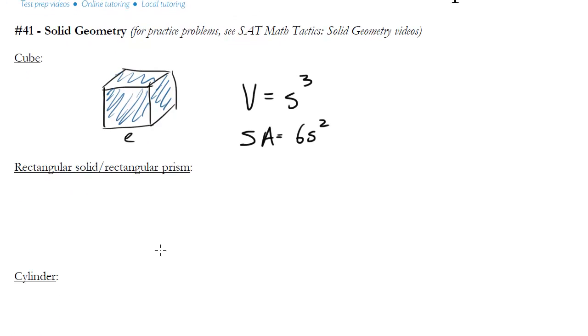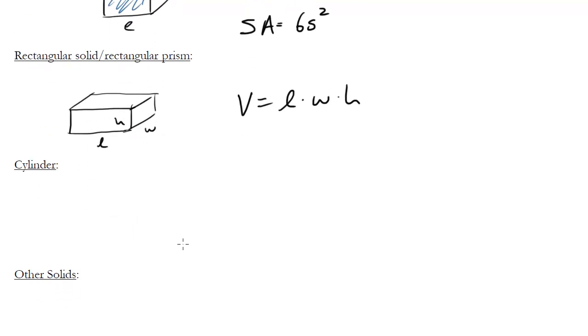we'll talk about it in a sec. For a rectangular solid, this is basically just like a cube except you've got rectangles forming the outsides of that box. The volume of this guy is length times width times height. So imagine this is length, width and height. Multiply them together and you get the volume.